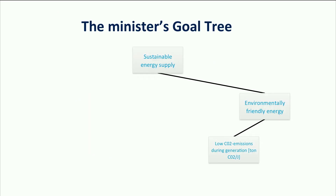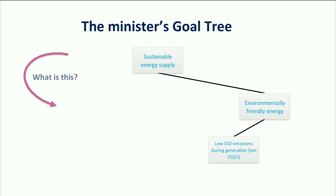We have constructed a hierarchy of goals now. However, do we already have a good set of criteria? Not really. This hierarchy is represented by only one criterion — low CO2 emission — in the right down corner. Sustainable energy supply means much more than only low CO2 emissions. You find these criteria by asking 'what is this?' for every goal in this tree.